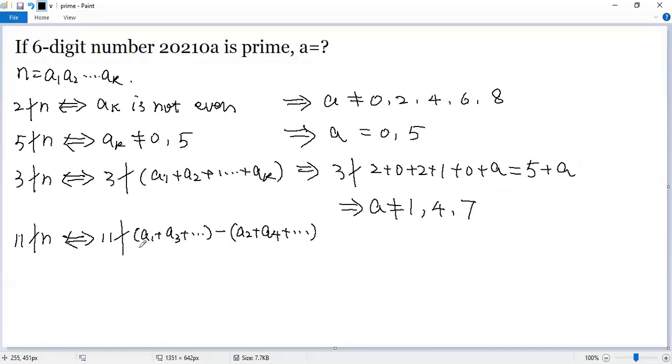So finally, let's look at 11. 11 cannot be a factor of it, so that means 11 is not a factor of the difference of the sum of the digits in the odd position: 2, 2, 0. So 2 plus 2 plus 0 minus the digits in the even position.